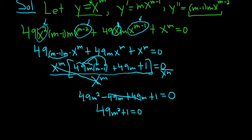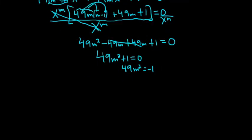I guess we could solve this for m. We could subtract 1. So we would get 49m squared equals negative 1. And then to finish solving this, we would divide by 49. So m squared is equal to negative 1 over 49.